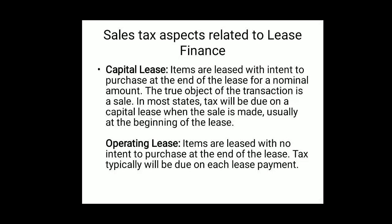Now, focusing on the two main lease types — the financial lease, also known as capital lease, and the operating lease, also known as service lease. In the case of a capital lease, where items are leased with the intention for the lessee to purchase at the end of the lease period for a nominal amount, the true object of the transaction is a sale. In that case, tax will be due on the capital lease when the sale is made.